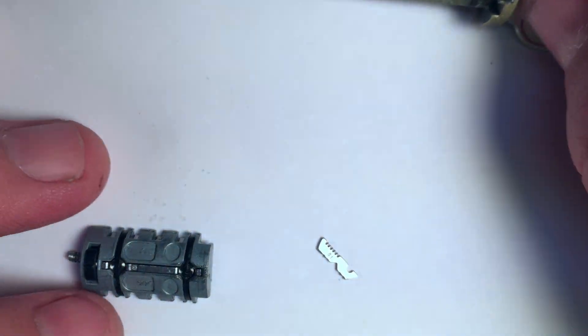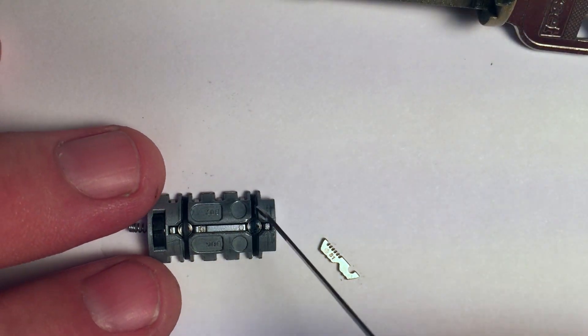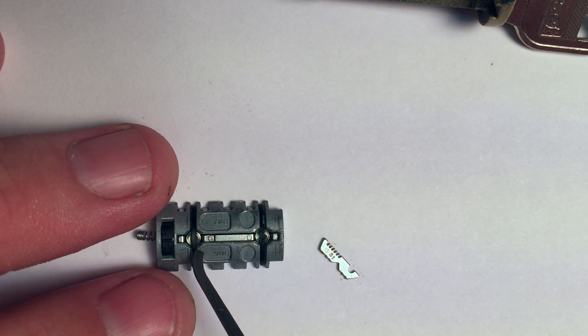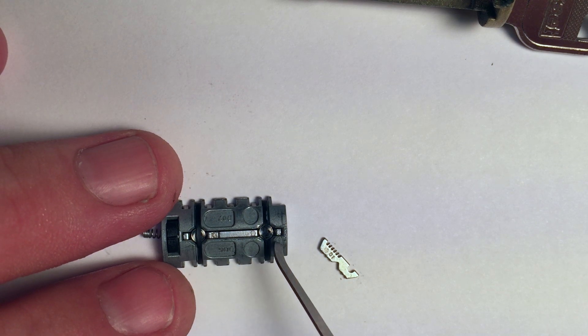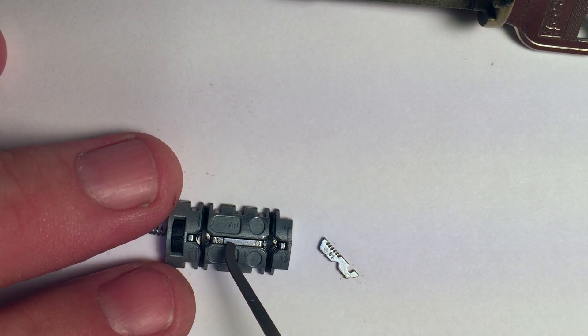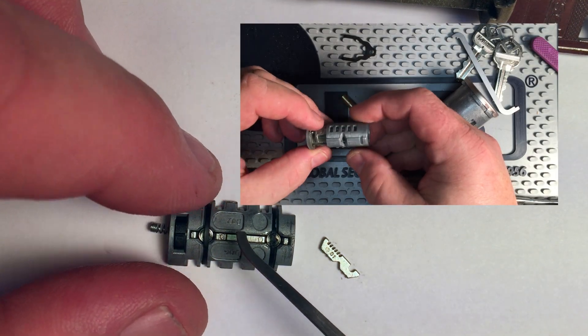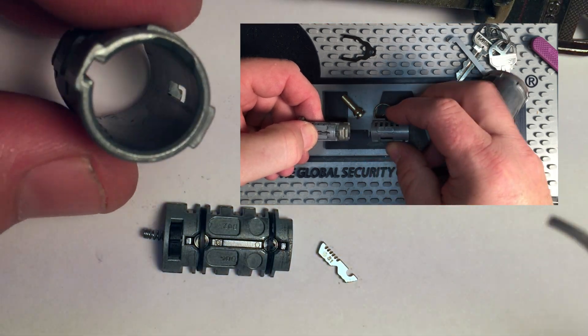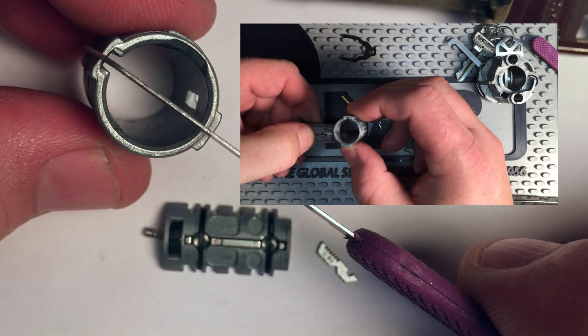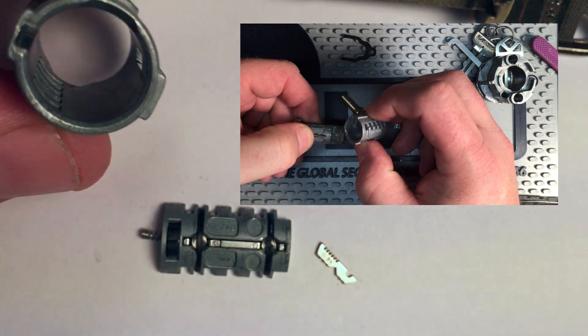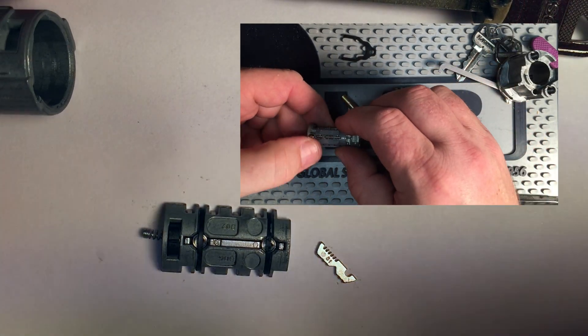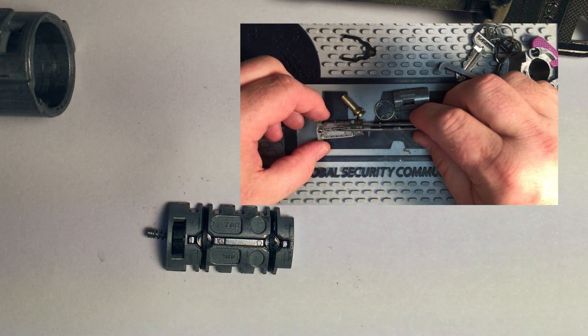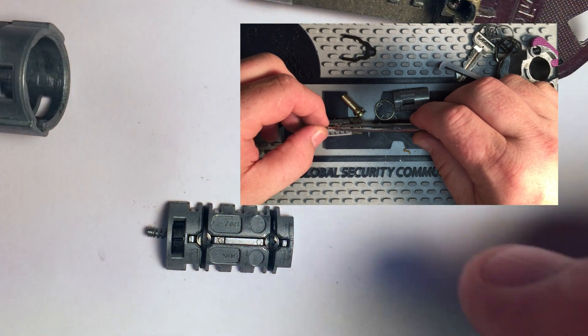What Chad's lock has that mine didn't is these retaining clips and a very different sidebar design. Mine didn't have these retaining clips, captured springs, or squared-off sidebar. Mine had a triangular shaped sidebar which nested into a correspondingly V-shaped sidebar channel. When I put rotational force on the core, it would try to drive the sidebar into these wafers.